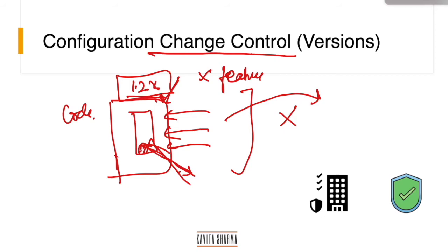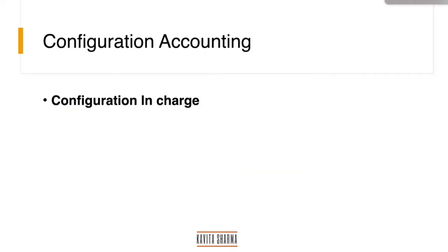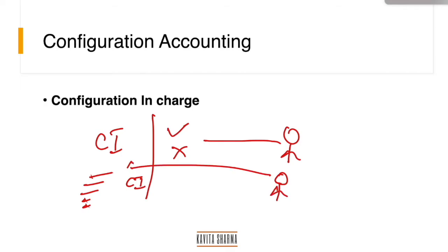Configuration accounting, as I told you, the configuration in charge based on the request gives the access or does not give the access to the CIs. Think it like a librarian. So there are a lot of books here. The librarian looks at what is the request. If it is available, gonna give it to these people or not, and then update the item.